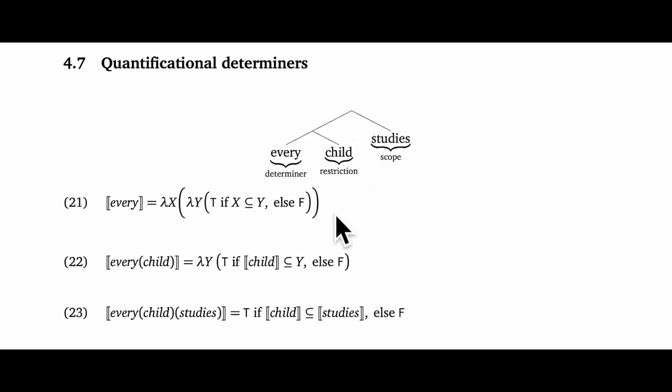Let's go a level deeper and see how that works using 21, which is our actual analysis of every. This is a function that takes two arguments, x and y, both sets. Once it has them, it will deliver a truth value. The x argument associates with the restriction.